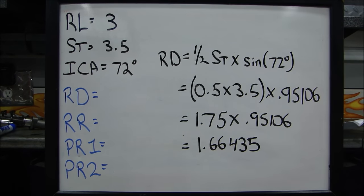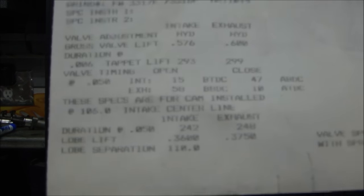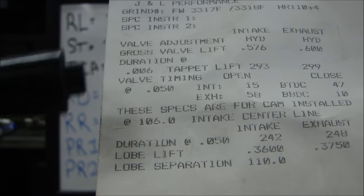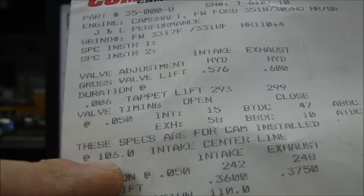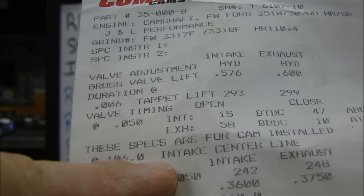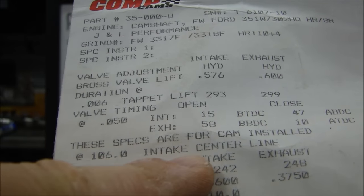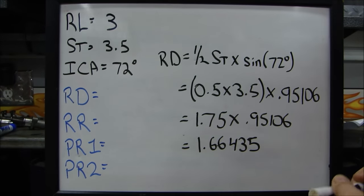That will come from the cam card. And I have a cam card handy here, and I'll just show you right here. Right here it says, if you see these specs are for cam installed at 100, this one's at 106 degrees intake centerline angle. So you'll get your centerline, installed centerline angle off your camshaft cam card.